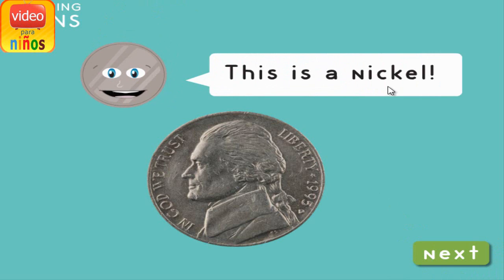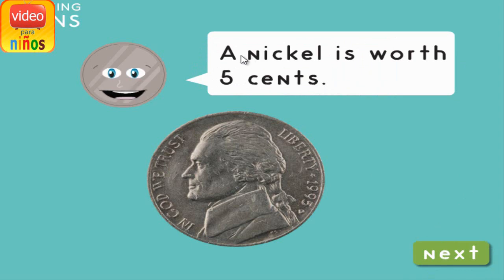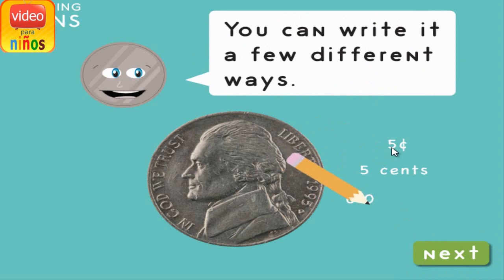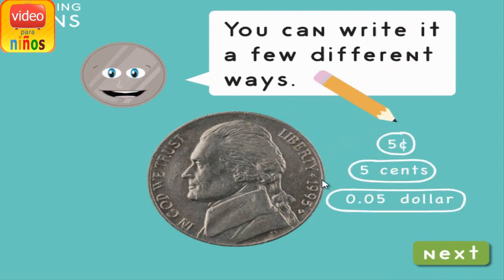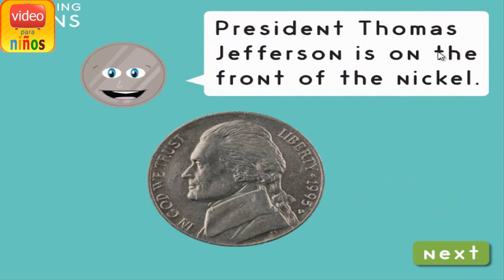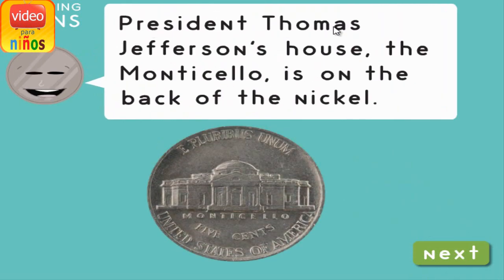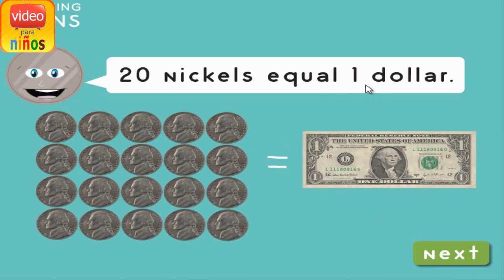This is a nickel. A nickel is worth five cents. You can write it a few different ways. President Thomas Jefferson is on the front of the nickel. President Thomas Jefferson's house, the Monticello, is on the back of the nickel. Twenty nickels equal one dollar.